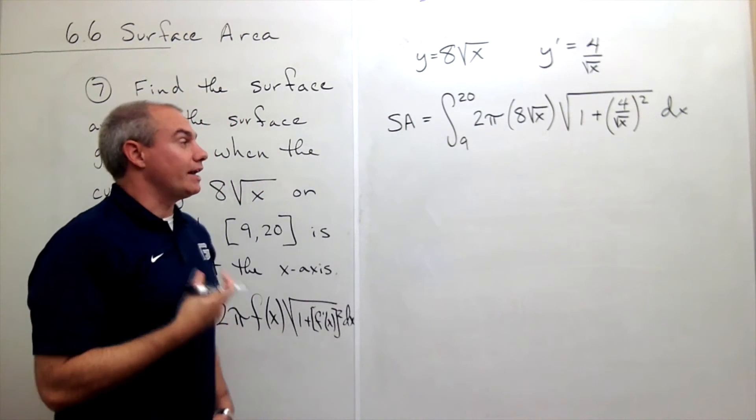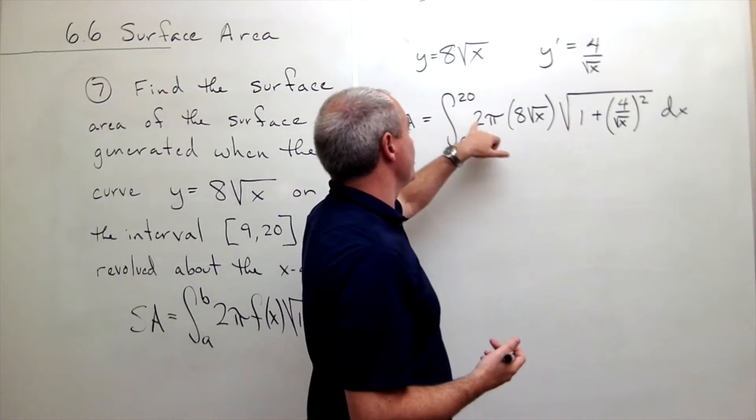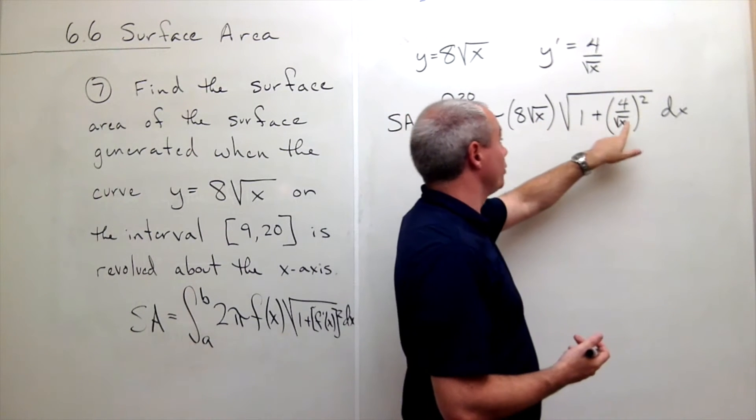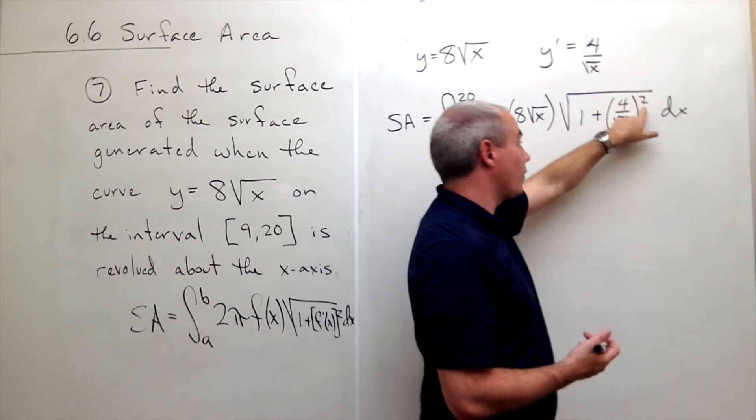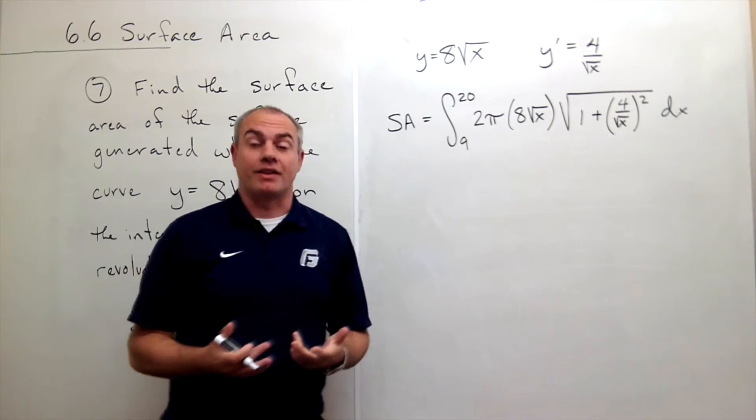At this point it's never a bad idea to just check your work real quick. I've got integral from a to b of 2π f(x) square root of 1 plus the derivative squared dx. All the pieces are there. Now we just need to integrate this.